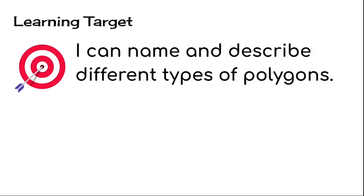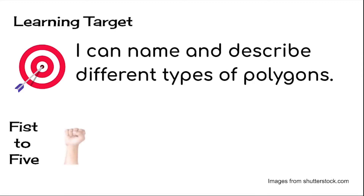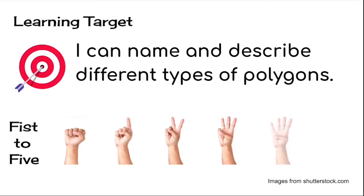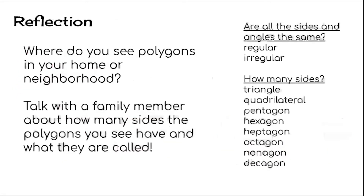So our learning target for this lesson was: I can name and describe different types of polygons. Go ahead and hold up your hand and rate yourself from one to five. Are you feeling like you can't name and describe different polygons at all? Or you're starting to? You're getting the idea if you hold up three fingers. And if you hold them all up, you're feeling really good about naming and describing polygons. Today, when you reflect on this lesson, talk with someone in your house about where you see polygons in your home or neighborhood. Talk with them about how many sides the polygons you see have and what they are called. I bet you'll find lots of polygons around your house and neighborhood.